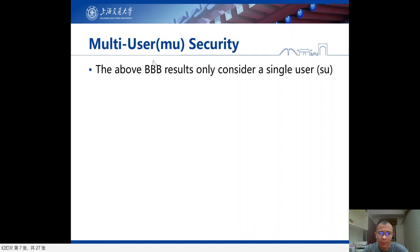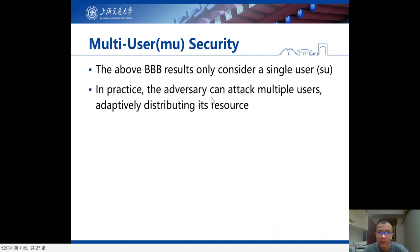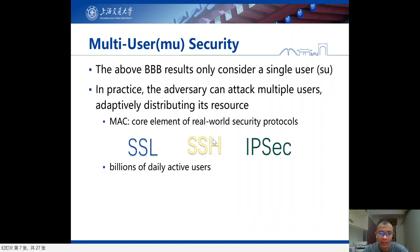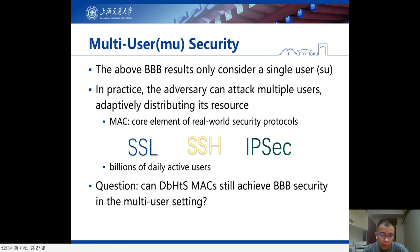However, the above beyond-birthday bound security only considers a single user — they only consider an adversary attacking a single user. But in practice, the adversary can attack multiple users, adaptively distributing its resources. This is particularly true for MACs, which is one of the most commonly used cryptographic algorithms in practice, a core element of real-world security protocols such as SSL, SSH, IPsec, with billions of daily active users. So the question is: how does the number of users affect the security of MACs, and can DBH MACs still achieve beyond-birthday bound security in the multi-user setting?